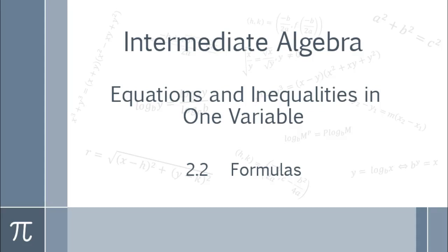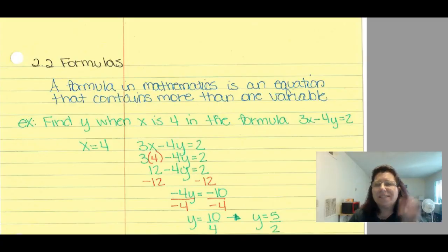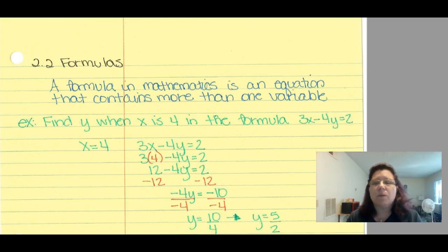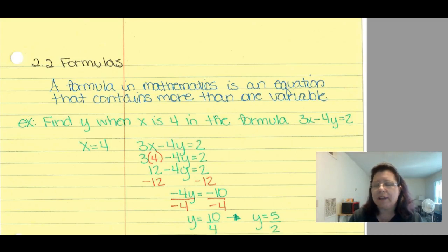Welcome to intermediate algebra, equations and inequalities in one variable, lesson 2.2: formulas. Working with formulas is slightly different than working with equations. An equation has one variable; a formula has more than one variable. For example, x + 3 = 9 is an equation, while 3x - 4y = 2 is a formula because it has two variables. A formula is an equation with more than one variable.